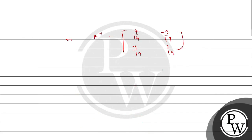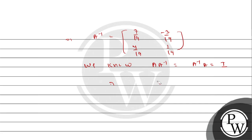We know that A into A inverse, or A inverse into A, gives the identity matrix. If we square it, A squared into A inverse squared, we also have A to the power minus 2. So A to the power minus 2 can be derived from squaring.